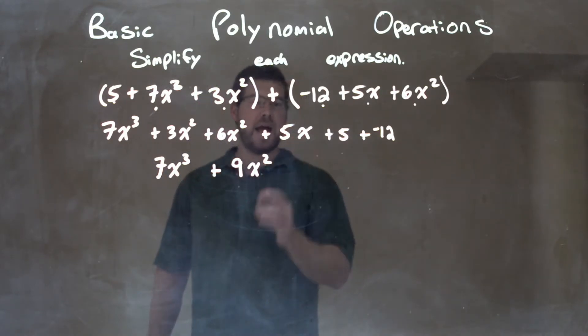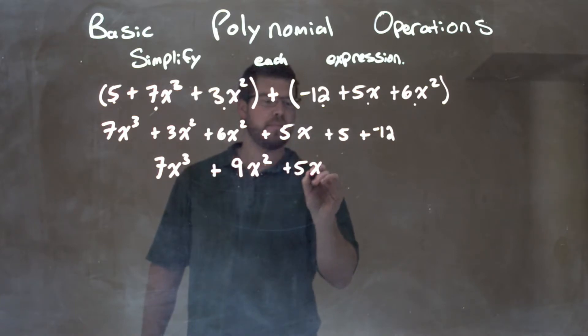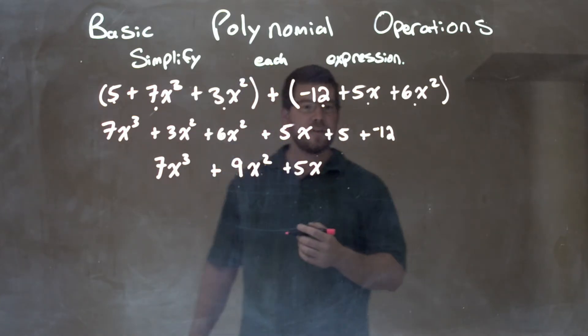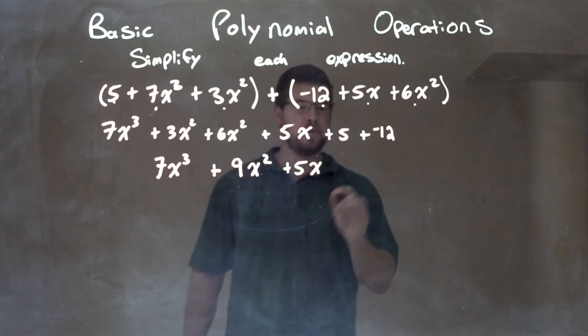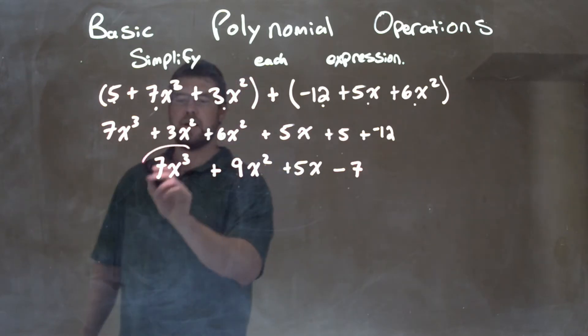Now we have the x's. There's only one x, so we bring down the 5x. Then lastly, we have a positive 5 and negative 12, which comes together to be a minus 7. And there we have our final answer here.